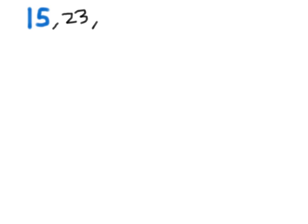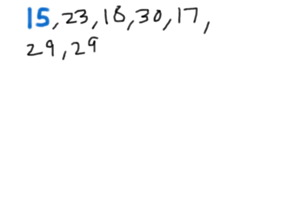So here you have 10 tomato plants. The first one has 15, then 23, 18, 30, 17, 29, 29, 33, 14, and 25. So you have 10 tomato plants, and those 10 numbers represent the number of tomatoes on each plant.